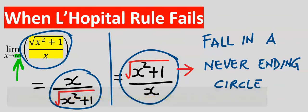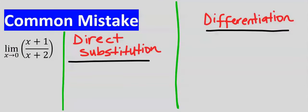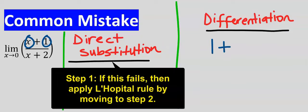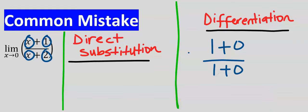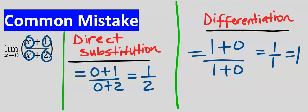One common mistake is for students to leave out direct substitution and rush into applying L'Hôpital's rule by differentiation. If you differentiate directly, you get 1. But by applying direct substitution first — which is the correct first step — you get 1 over 2, which is the correct answer. By skipping direct substitution and rushing into L'Hôpital's rule, you get 1, which is wrong.